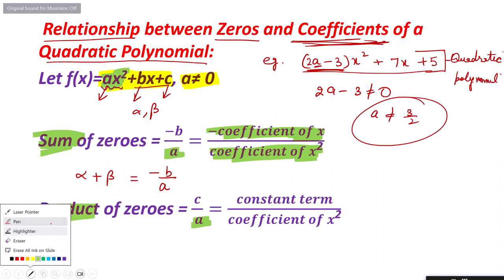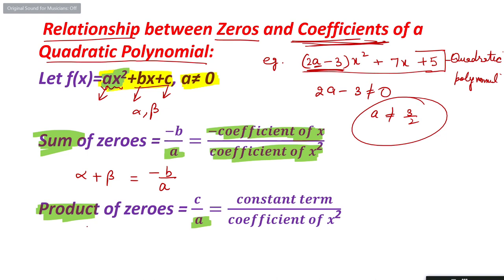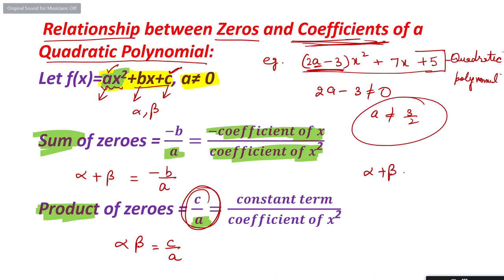The product of zeros — alpha into beta — equals c divided by a, that is the constant term divided by the coefficient of x². So alpha × beta = c/a. These two relationships — sum of zeros = −b/a and product of zeros = c/a — will be very useful in solving various types of questions.